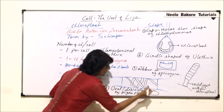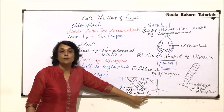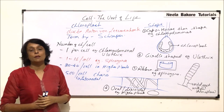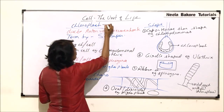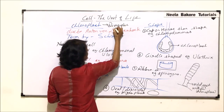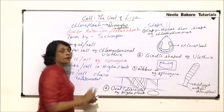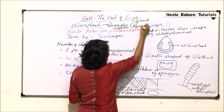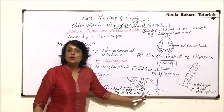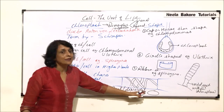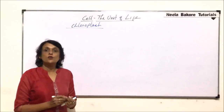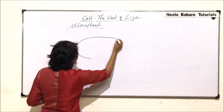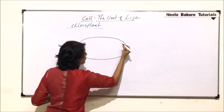Because the discoidal shape is found in higher plants, we study this structure as the most common one. So the number is variable and the shape is also variable. One more thing we need to understand is that chloroplasts are a dimorphic organelle — dimorphic means they exist in two forms: granal and agranal. We will understand this better after we cover the structure. The shape we will draw is the oval or discoidal shape seen in higher plants.